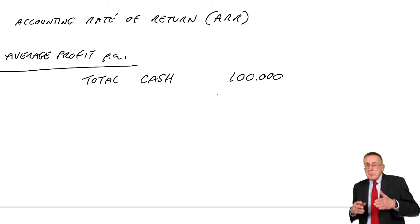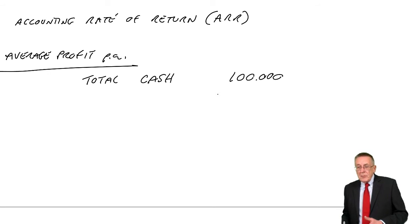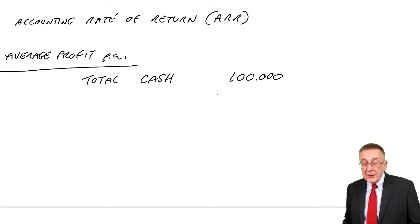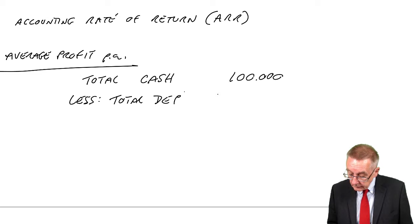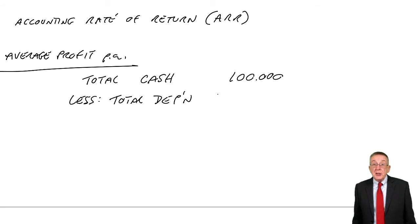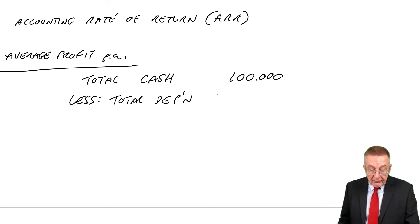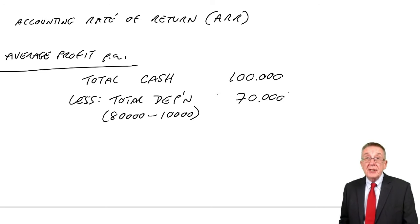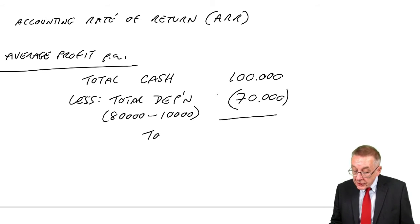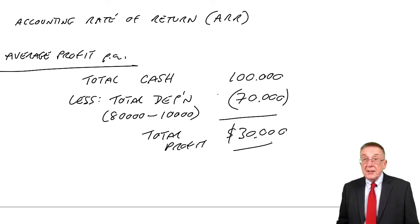But of course that's not the same as the profits, because profit is calculated after depreciation. So to get the total profit, what's the total depreciation going to be? Well, there are various ways we can depreciate, but in total, if it cost 80 and the scrap value is 10, the total depreciation will be 70,000. So the total profit will be 30,000.